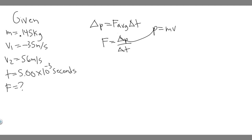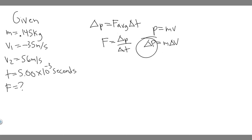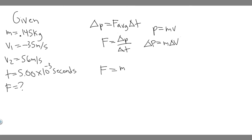Notice that this is the change in momentum. If we're solving for the change in momentum and we assume the mass is constant — in this case it is — it's just going to be delta P equals M times delta V. So the change in momentum equals the mass times the change in velocity. Plugging this in, force equals M times delta V over the change in time.